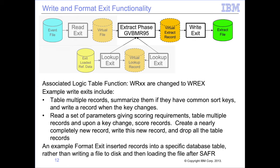SAFIR write routines are very efficient. Some examples of write exits include: tabulating multiple records, summarizing them if they have a common sort key, and writing records when the key changes; reading a set of parameters giving scoring requirements and tabulating multiple records upon a key change to score them. Write exits are in between read exits and lookup exits for complexity, mainly because of the complexity of dealing with extract records. The exit must know what the extract record will look like for a particular view, and any changes in the view can create a need to update the write exit.